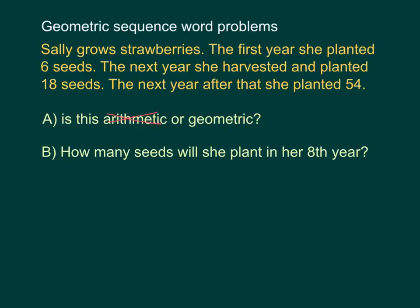Is there something I can multiply by six to get 18? Yes, I can multiply six times three to get 18. If I multiply by three again, do I get 54? Yes, I do. So this is a geometric sequence where the common ratio is three.